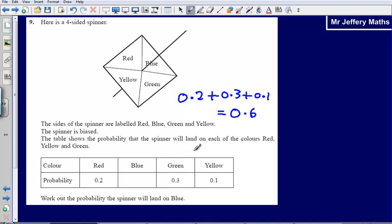If we add all of those together we get 0.2 plus 0.3 is 0.5 plus 0.1 is 0.6. That comes to 0.6. Well how many then do we need to add on to 0.6? To make it up to 1 we need to add on 0.4. So our answer to this would be 0.4.